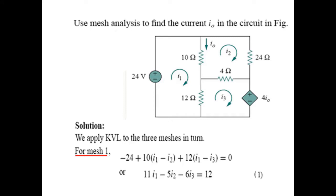Let's look into another example. In this example, we have to find the current I0, which is the current flowing through the 10 ohm resistance. There are three meshes here, so we'll name the current in the first mesh as I1, the current in the second mesh as I2, and current in the third mesh as I3, all three in the clockwise direction.